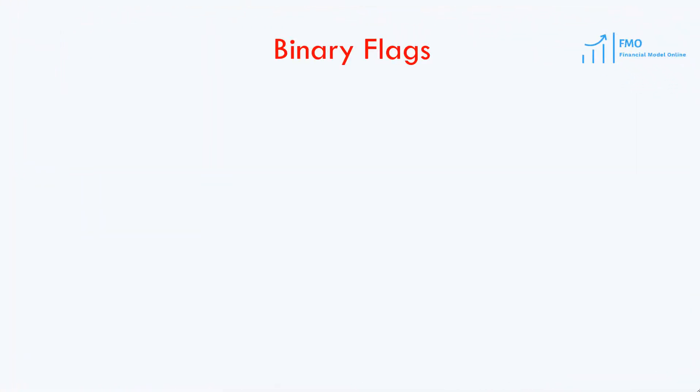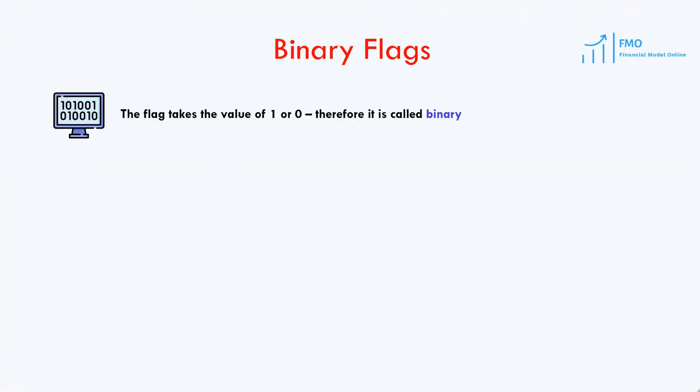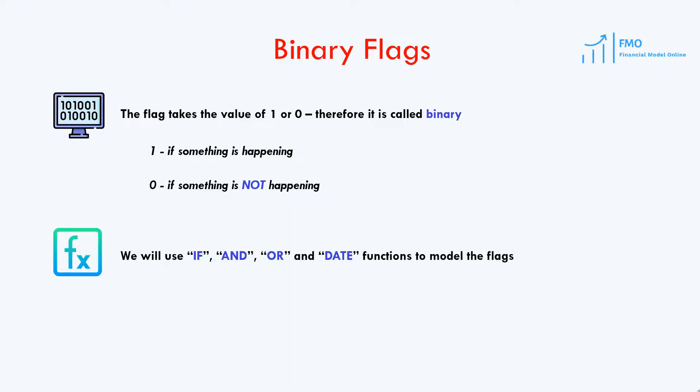We will build the timeline by means of binary flags. The flag will return the value of 1 or 0, and that is why it is called a binary flag — the outcome is binary, either 1 or 0. The flag will return the value of 1 if something is happening, and 0 if that something is not happening. We will be using a combination of IF, AND, OR, and DATE functions to build the flags.